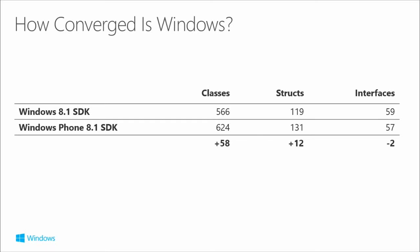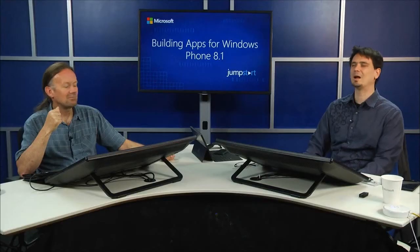Looking at how converged Windows really is: this is a diff of the APIs between the Windows 8.1 SDK and the Windows Phone 8.1 SDK, from Tim Heuer at Build 2014. The vast majority of APIs are converged between Windows and Windows Phone — well over 90%. The ones that aren't converged are largely APIs with very specific intent for use on phone or on Windows, or ones that would be resource-constrained if moved to the phone.